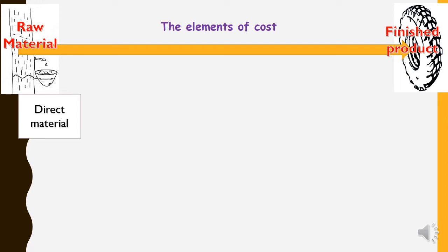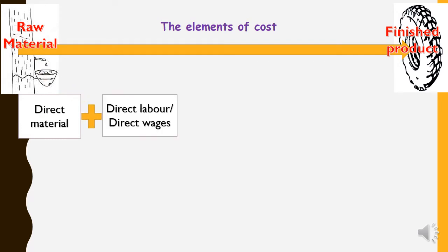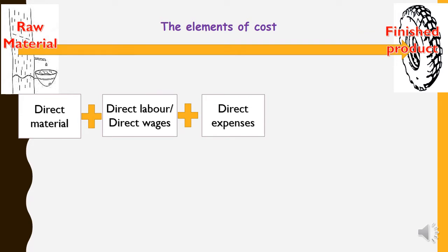We can't convert raw material into finished product alone — we need workers to work on it, so we pay wages. This is called direct labor or direct wages. Apart from direct labor, we also have direct expenses. One example of direct expenses is royalty — payment made for a pattern or design. For example, if a tire was designed by someone and we use that design, we pay them a royalty.